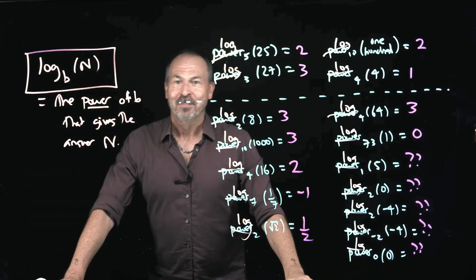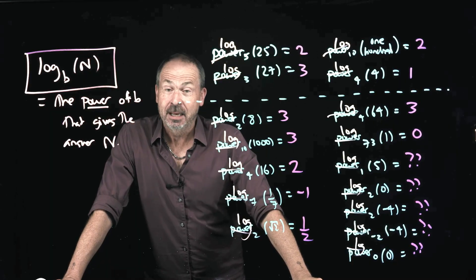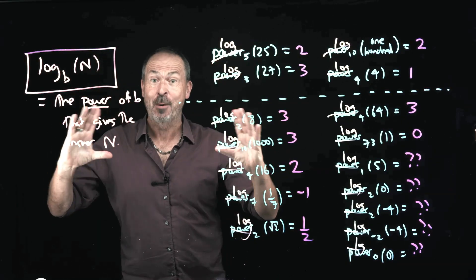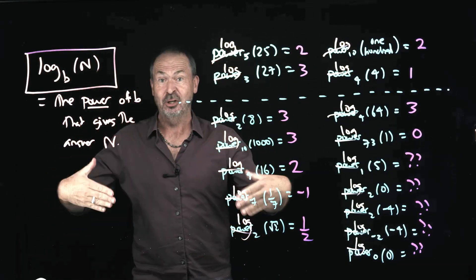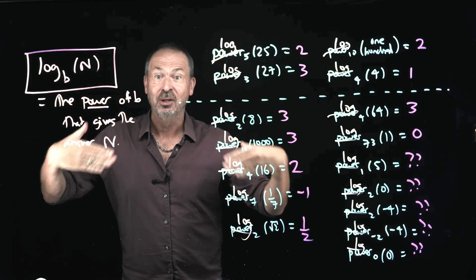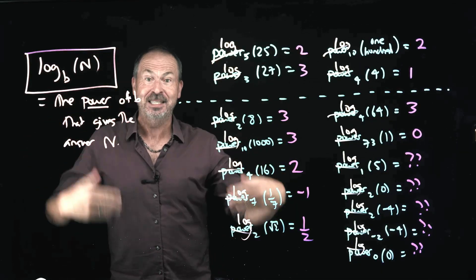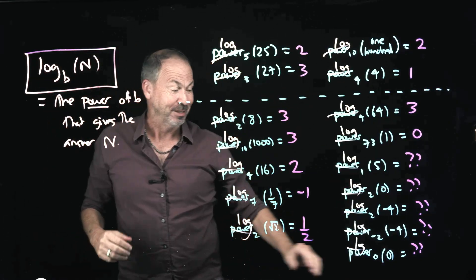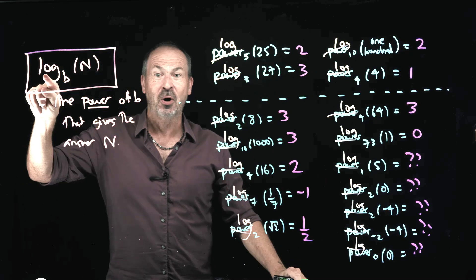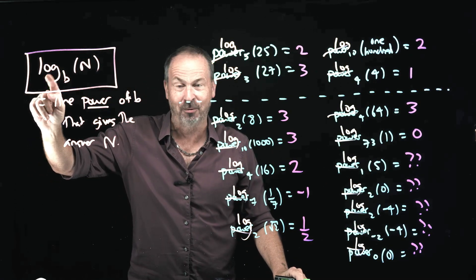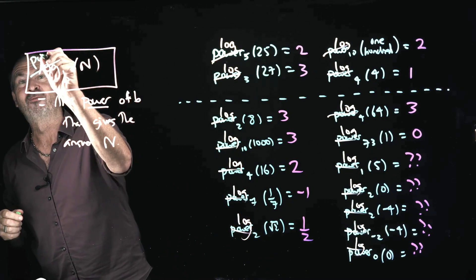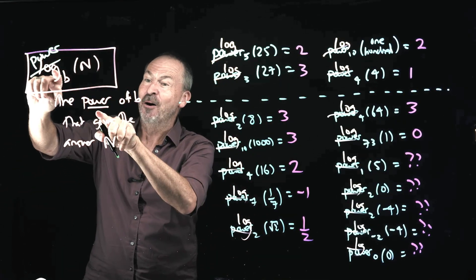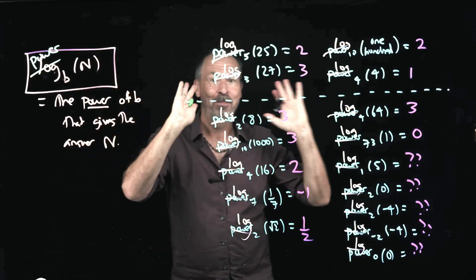Napier didn't see that at the time. His colleagues, his contemporaries, did not see it at the time. Exponents were very, very confusing — it took mathematicians a good hundred years to make proper sense of powers. It wasn't until the mid-1700s that people realised Napier's logarithms are just powers. My advice: if you see the word 'log' in a textbook or a problem, cross it out and write the word 'power'. Because log base B of N is the power of B that gives the answer N — it's just powers.